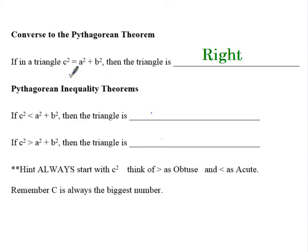Well, what if c squared doesn't equal a squared plus b squared? So that gives us two situations of inequalities. What if c squared is less than a squared plus b squared? Then the triangle is acute. What if c squared is greater than a squared plus b squared? Then the triangle is obtuse.